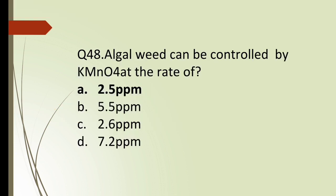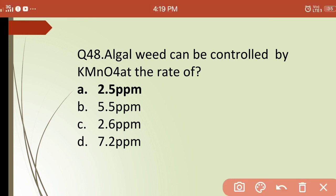Forty-eighth question: algal weeds can be controlled by KMnO₄ at the rate of? Options are: (a) 2.5 ppm, (b) 5.5 ppm, (c) 2.6 ppm, (d) 7.2 ppm. The correct answer is (a) — at the rate of 2.5 ppm, KMnO₄ can control algal weeds.